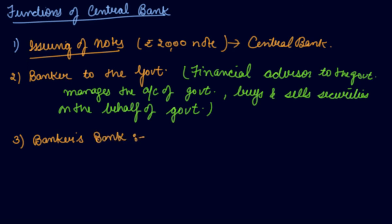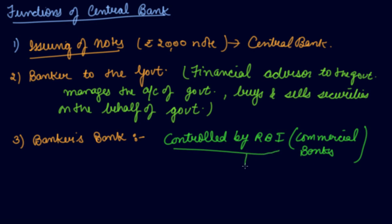Commercial banks are controlled by RBI, the central bank. If commercial banks need loans or want to deposit money, they go to the central bank. It is the apex bank of all banks in the country. The central bank has the same relationship with other banks as commercial banks have with customers. Whatever functions commercial banks perform for the public are performed by the central bank for commercial banks.